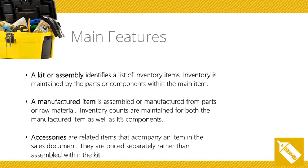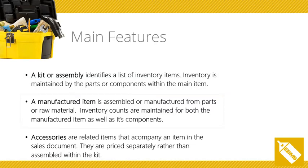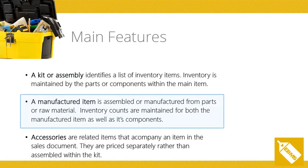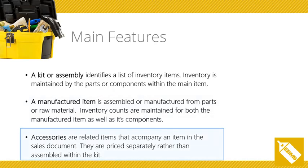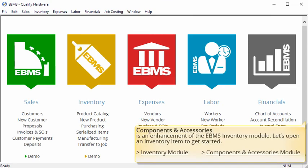In this tutorial, we will take you on a brief tour of the main features found in the Components and Assemblies module. A kit or assembly identifies a list of inventory items. Inventory is maintained by the parts or components within the main item. A manufactured item is assembled or manufactured from parts or raw material. Inventory counts are maintained for both the manufactured item as well as its components. Accessories are related items that should accompany an item in the sales document. Accessories differ from kits and manufactured items in that they are priced separately rather than assembled within the kit. Components and accessories is an enhancement of the EBMS inventory module.